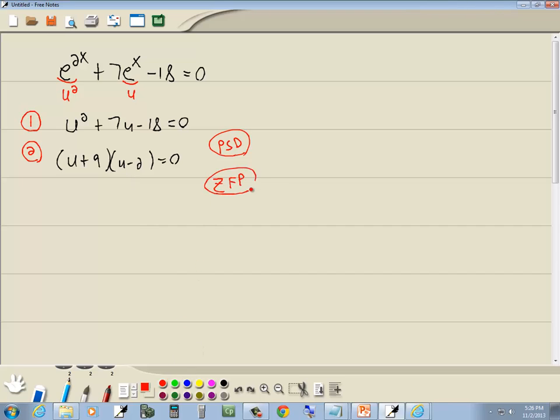So this factors as u plus 9 times u minus 2 equals 0. Zero factor property: you get 0 on one side, and you factor the other side, and you set each factor equal to 0. So I'll set u plus 9 equal to 0, and u minus 2 equal to 0, and solve them. And I get u equals negative 9, and u equals positive 2.